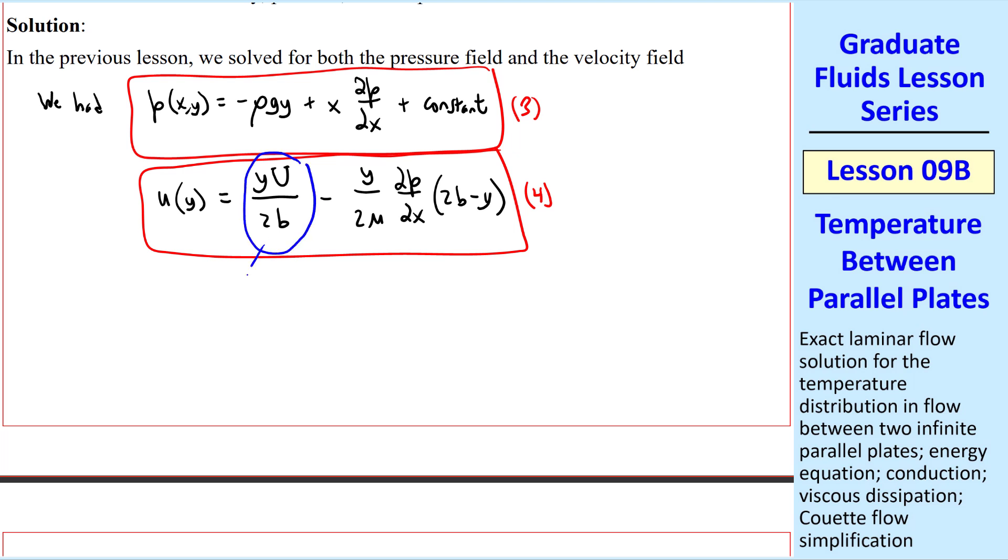We mentioned that this part, if there's no pressure gradient, represents Couette flow. And this part, if the top plate is not moving, represents planar Poiseuille flow. Now let's calculate the temperature field.